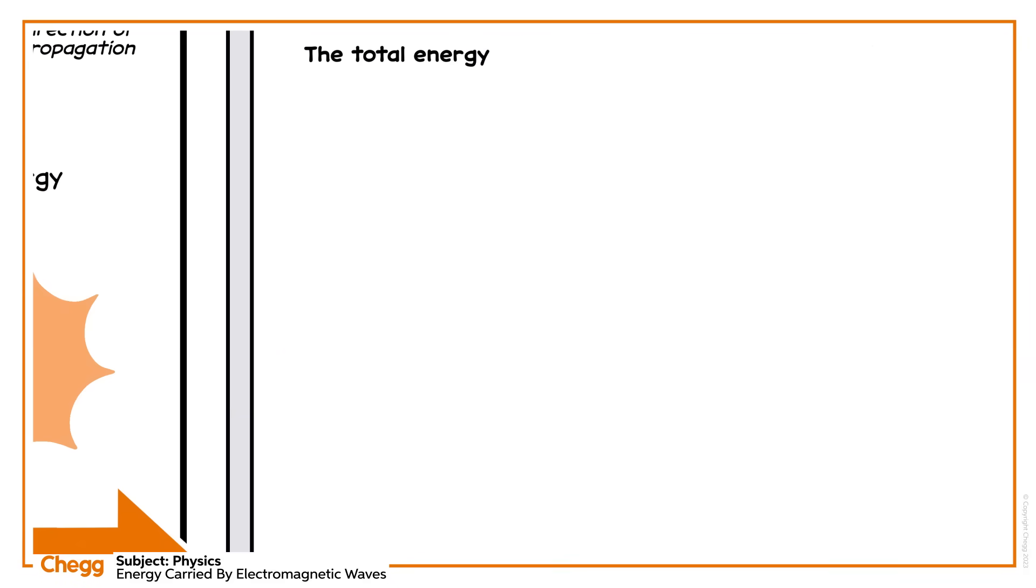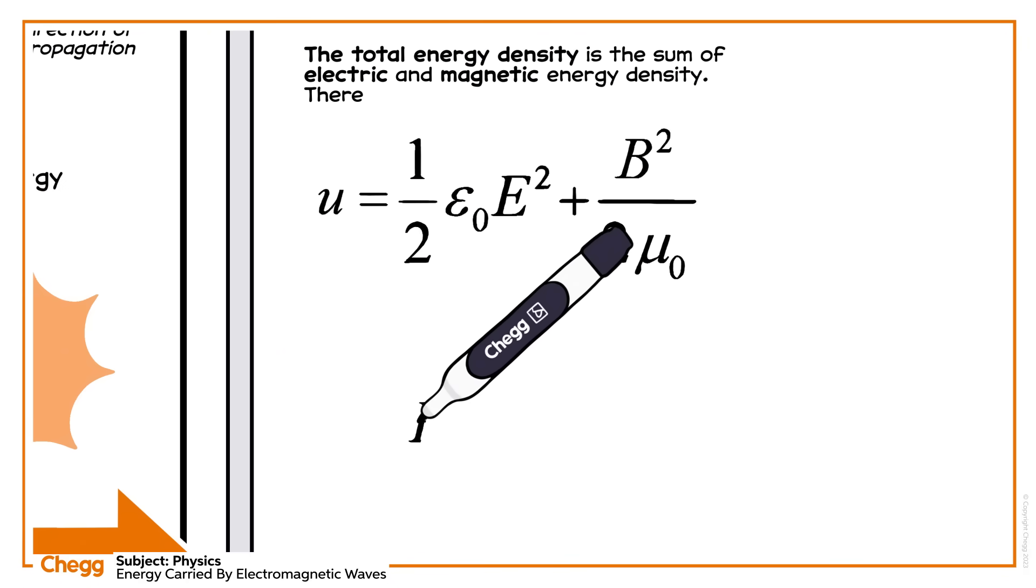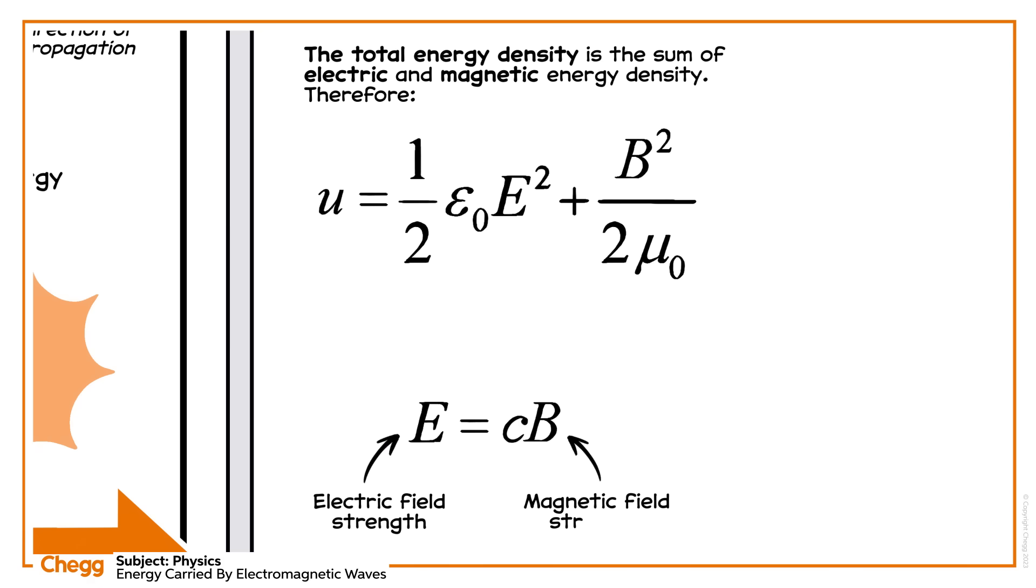So again, the total energy density is the sum of the electric and magnetic energy densities. Therefore, the relation between the electric field strength, magnetic field strength, and speed of electromagnetic wave C is given by this equation.